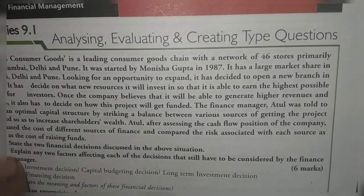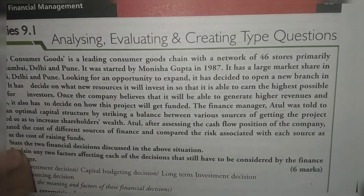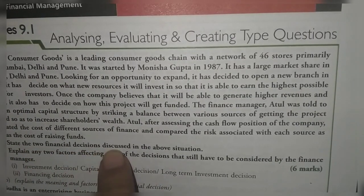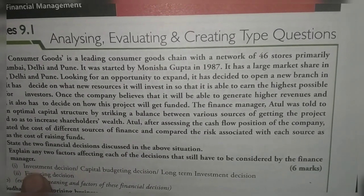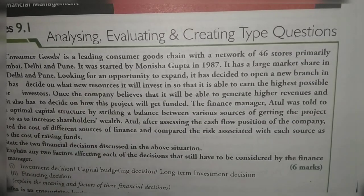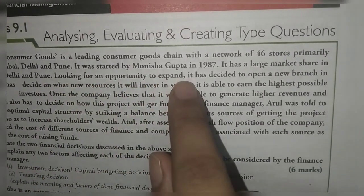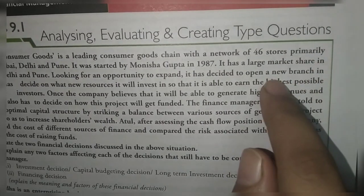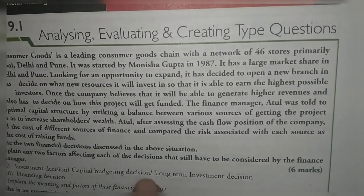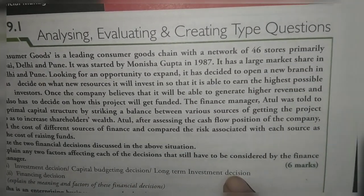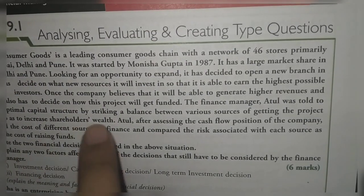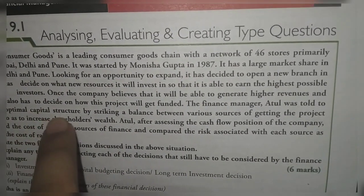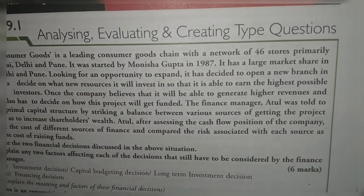This is the whole case study. The two questions asked are: state the two financial decisions discussed in the above situation. The first is the investment decision — looking for an opportunity to expand, it decided to open a new branch, which comes under investment decision — capital budgeting and long-term decision. The second is the optimal capital structure, which comes under the financing decision.